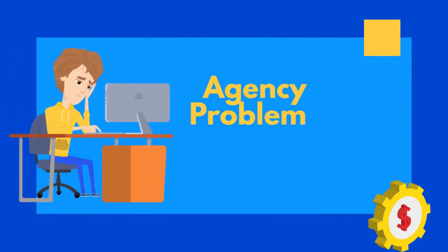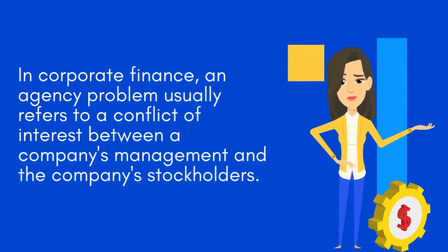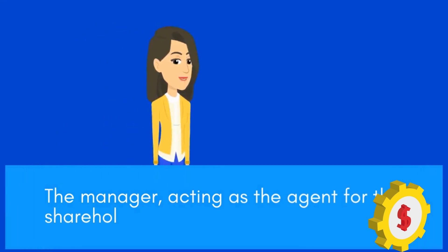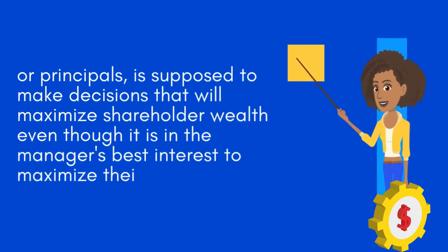Agency Problem. In corporate finance, an agency problem usually refers to a conflict of interest between the company's management and the company's stockholders. The manager, acting as the agent for the shareholders, or principals, is supposed to make decisions that will maximize shareholder wealth, even though it is in the manager's best interest to maximize their own wealth.